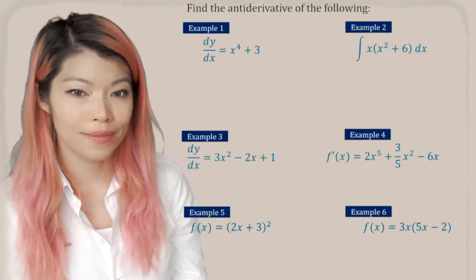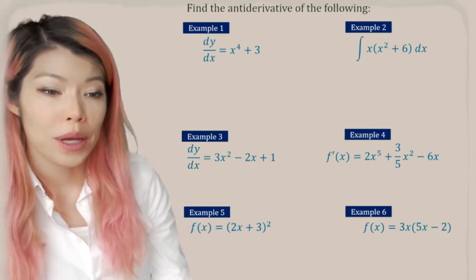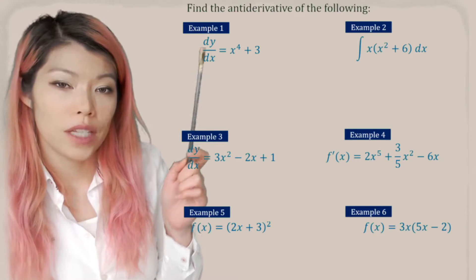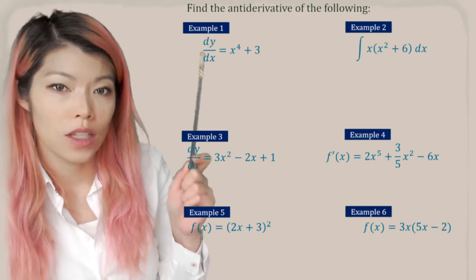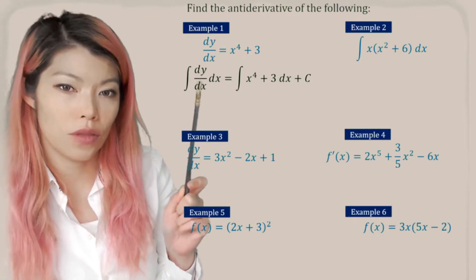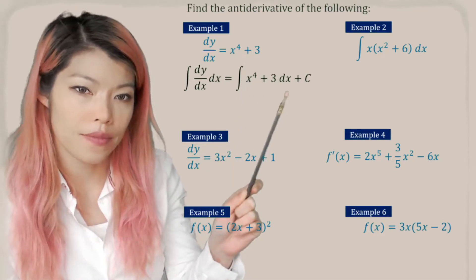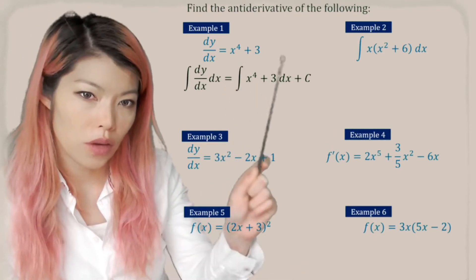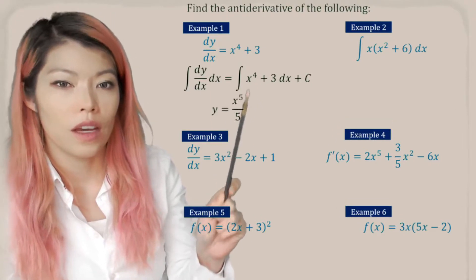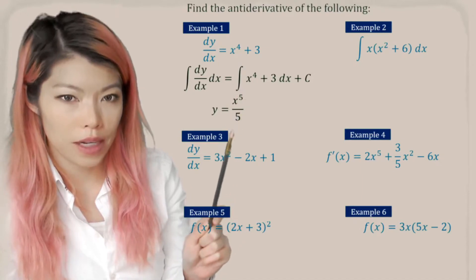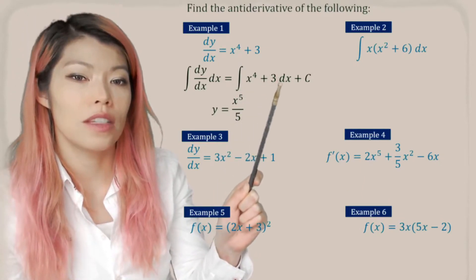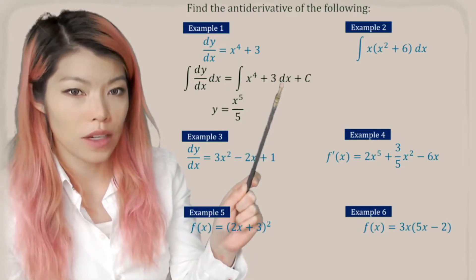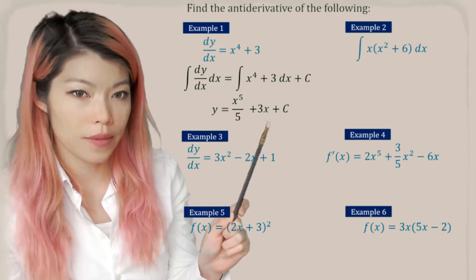Let's try some examples. If you already know this you can pause the video and give it a go, but otherwise follow along and especially look at the way we use the notation. Example 1: we have dy/dx and now we're looking for y, so we find the anti-derivative by putting that integral symbol there and doing the same thing to the right. x to the 4, add 1 becomes x to the 5, divide by the new power which is 5. The 3 has x to the 0 — when there's no x it means x to the 0, because x to the 0 is 1. So x to the 0 add 1 becomes x to the power of 1, divided by 1, it's just 3x, and we don't know what the c is.